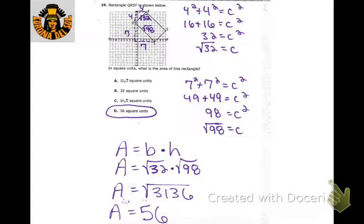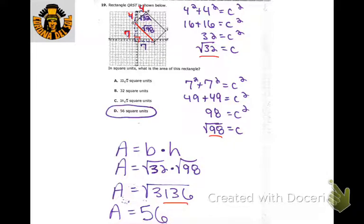Next one we have a rectangle, so we need to find these lengths. Draw a little right triangle — you've got 4 and 4 there — use the Pythagorean theorem, and we get √32. Then find the other length — that one is 7 and 7 — giving √98. For rectangles and parallelograms, area is base times height. Multiplying them together gives √3136. That's a perfect square, so on your calculator you get 56.